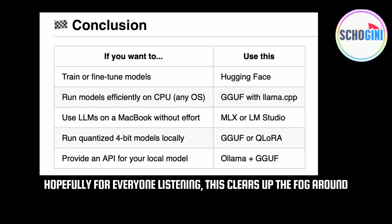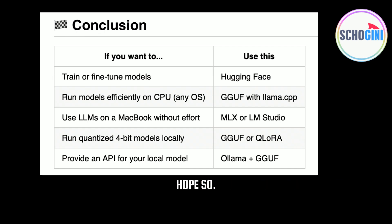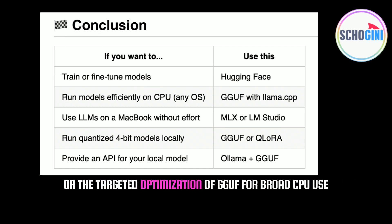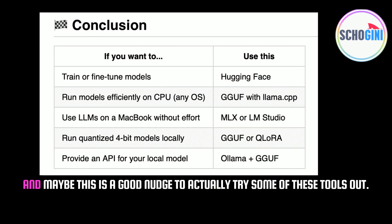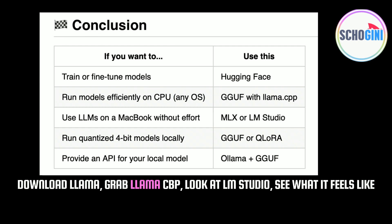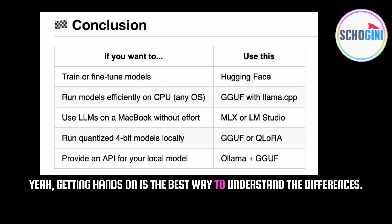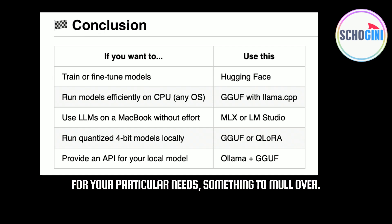Hopefully this clears up the fog around these different formats and why quantization matters so much. As you think about your next project, consider the balance: do you need the all-around flexibility and vast library of Hugging Face, or the targeted optimization of GGUF for broad CPU use, or MLX for peak Apple Silicon speed? Getting hands-on is the best way to understand the differences — download a model, grab Llama.cpp, look at LM Studio, and see what it feels like to run these models yourself right on your own machine.